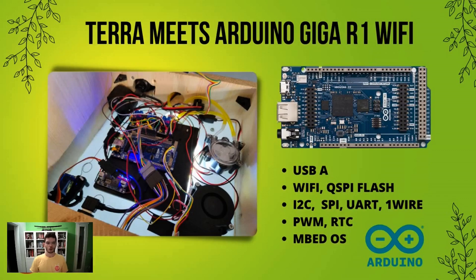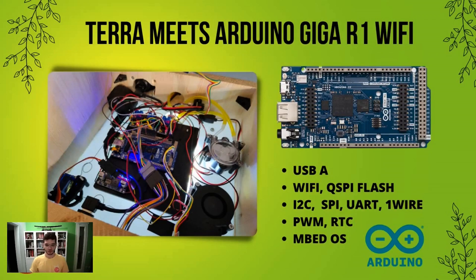You already know perfectly well the potential and the performance of the Giga R1 Wi-Fi. This new product from Arduino is perfect for the Terra project. A single board has made it possible to meet all of Terra's requirements — having on the same board a USB in host mode, Wi-Fi connection, non-volatile external memory, various digital communication interfaces like I2C, SPI, UART, OneWire, many GPIOs available, and the ability to use a real-time operating system like EmbedOS.